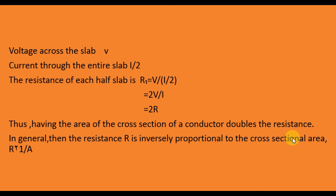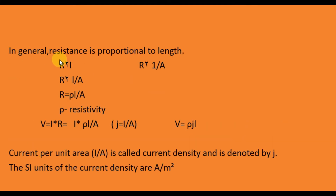In general, resistance R is inversely proportional to cross-sectional area A: if A is large, R is small. Also, resistance is proportional to length L: if L increases, R increases. Combining these two relationships, R is proportional to L/A.